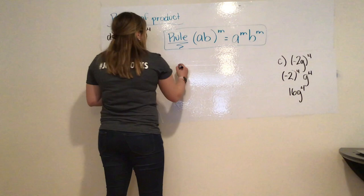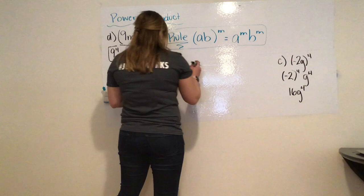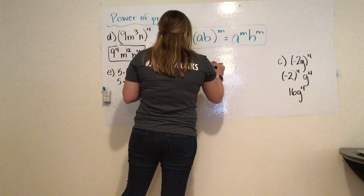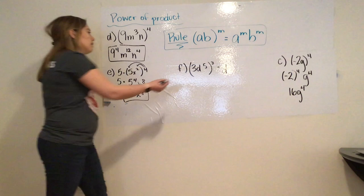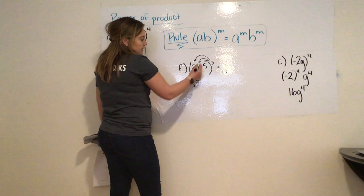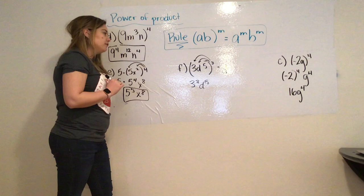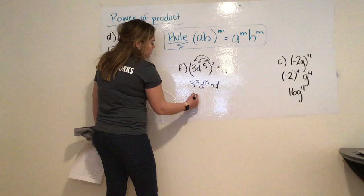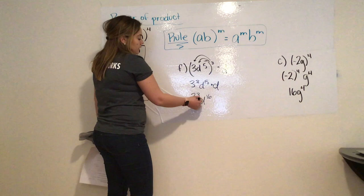And then, F is similar to question E. So, we have 3d to the power of 5, all to the power of 3, times d. Same thing. I'm going to distribute my powers to each variable inside the parentheses. So, I have 3 to the third. D to the fifth power is being multiplied three times. So, d is really being multiplied by a total of 15. Then, I have another d being multiplied. So, my final answer is 3 to the power of 3, and then d to the power of 16.